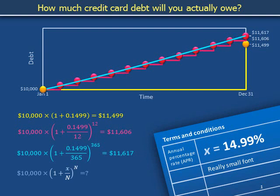The debt owed after a year seems to be stabilizing around $11,617. If the credit card company subdivides the year into n time periods and increases your debt by an nth of your APR each time period, what is the interest owed at the end of the year?